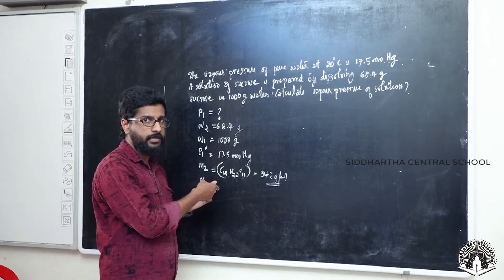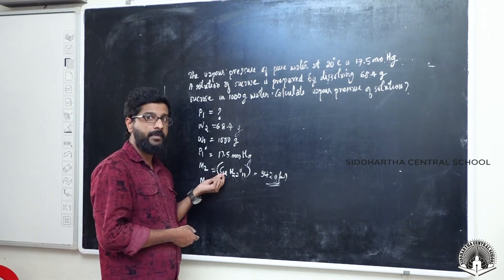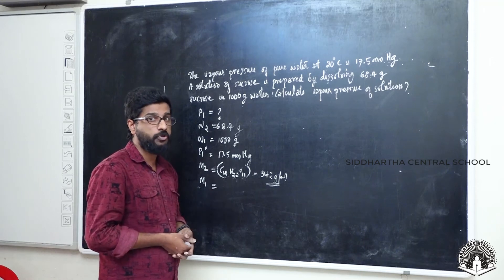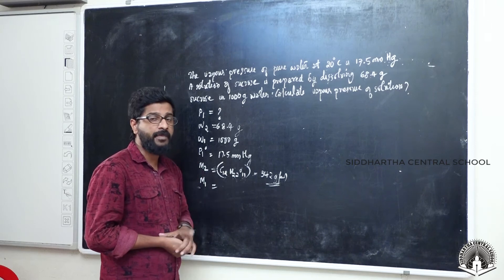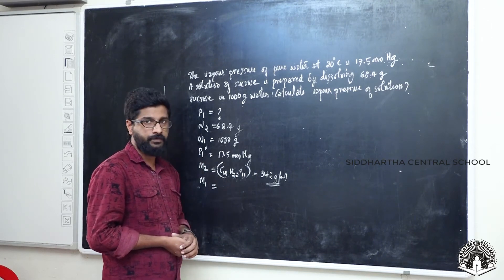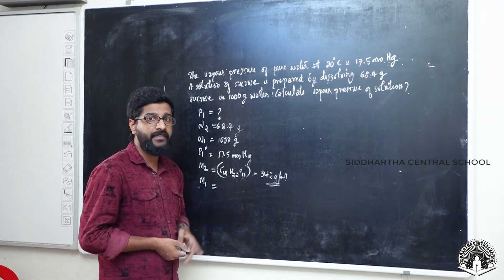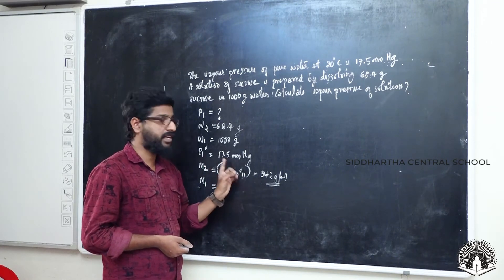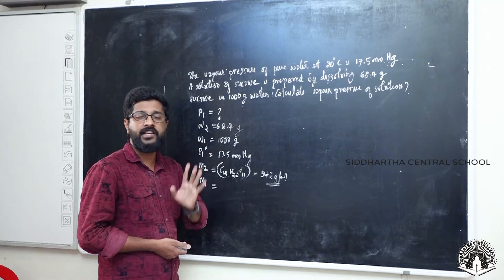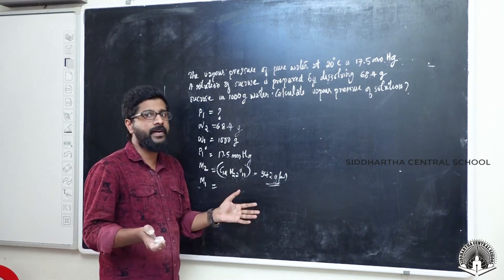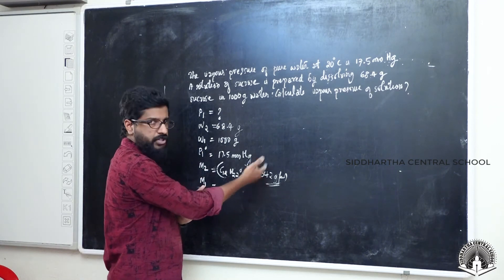Let's verify: C12 means 12 carbons, each with atomic mass 12, so 12 × 12. Plus 22 hydrogens, atomic mass 1, so 22 × 1. Plus 11 oxygens, atomic mass 16, so 11 × 16. The total gives 342. So M2 equals 342 grams per mole.